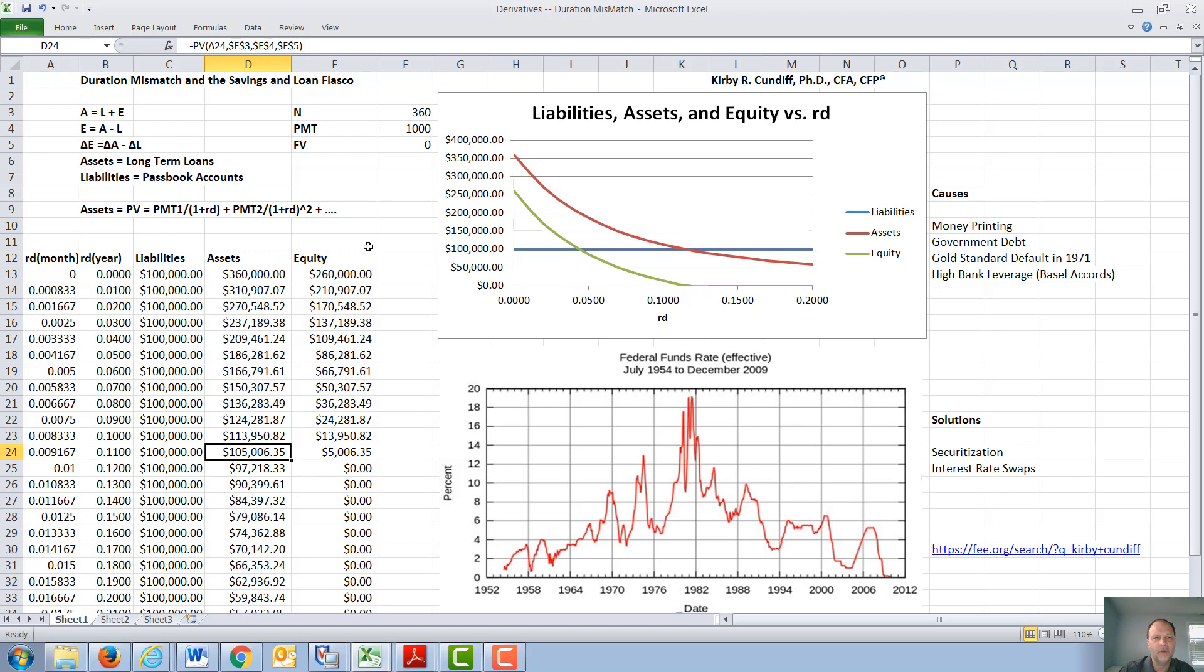So for a typical savings and loan, let's say we had a 5% interest rate, we had the value of a loan at $186,000 being backed by $100,000. So equity is going to be assets minus liabilities, the asset to the bank minus the passbook accounts in the bank, leaving $86,000 in equity. Most banks actually don't have this much equity. As interest rates go up, we would see the value of the equity plummet down to zero, in this case at 12%.